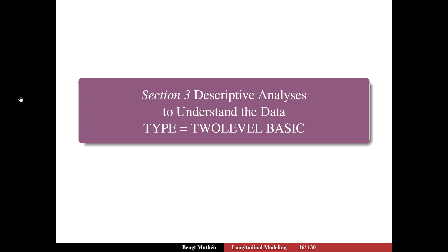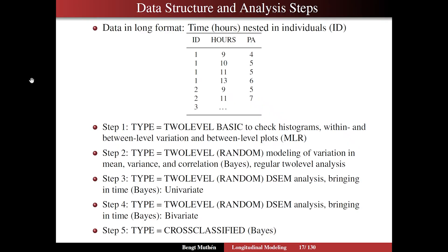In section 3 we're going to take a look at descriptive analysis to understand the data using type equals two level basic. First, on slide 17, let's remind ourselves about the data structure. Data are going to be in a long format, so we have time nested in individuals. Here we show the three key columns in the data: ID, hours, and the positive affect score.